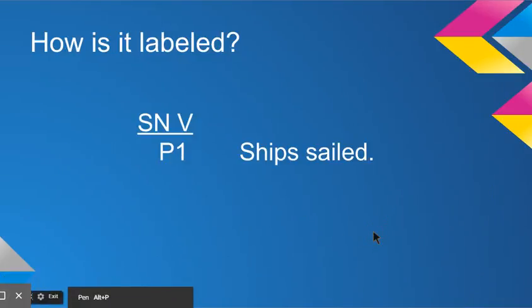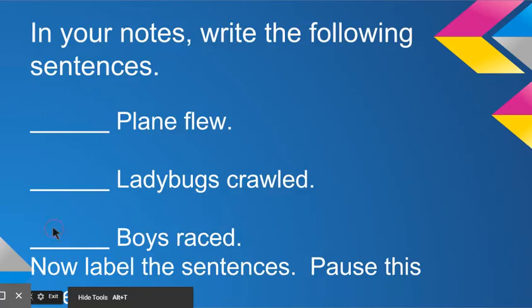And then continue. All right, so how did we label this? To the left we have our pattern line and then again we have our subject noun, which is ships, so we're going to mark it SN. And then what is being said about ships? Ships sailed. Sailed is our verb, that's the action. Okay, I'm going to clear it again. All right, let's move on.